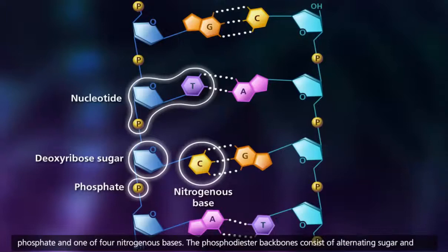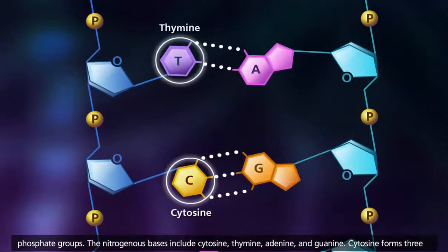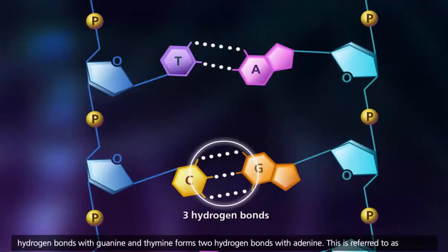The nitrogenous bases include cytosine, thymine, adenine, and guanine. Cytosine forms three hydrogen bonds with guanine, and thymine forms two hydrogen bonds with adenine. This is referred to as complementary base pairing.